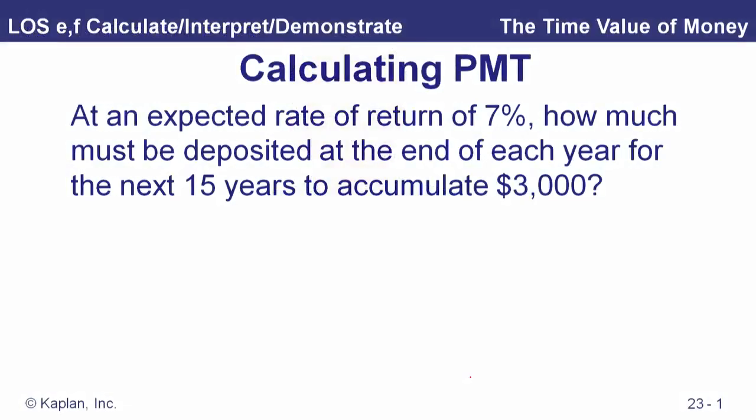We can also use the time-value-of-money keys to calculate any of the five variables — N, I/Y, FV, PV, and PMT. Put in four of them and solve for the other one. Here we calculate payment: with an expected rate of return of 7%, how much must be deposited at the end of each year for the next 15 years to accumulate $3,000? N is 15, I/Y is 7%, PV is 0, FV is $3,000.